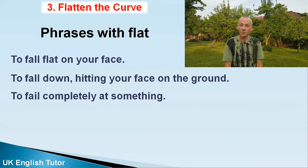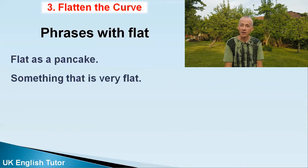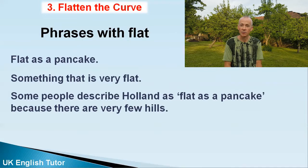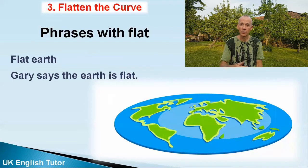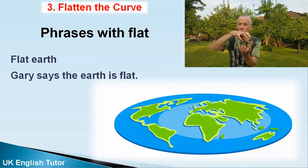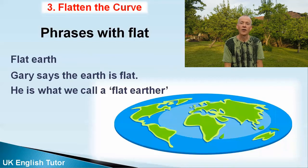We describe some things that are very flat as 'flat as a pancake.' Some people describe Holland, the Netherlands, as being flat as a pancake because there are very few hills. Then there's the way some people describe planet Earth — Gary thinks the planet Earth is flat as a pancake, even though all the moons and planets we can see are like a ball shape, a sphere. So we call Gary a flat Earther.